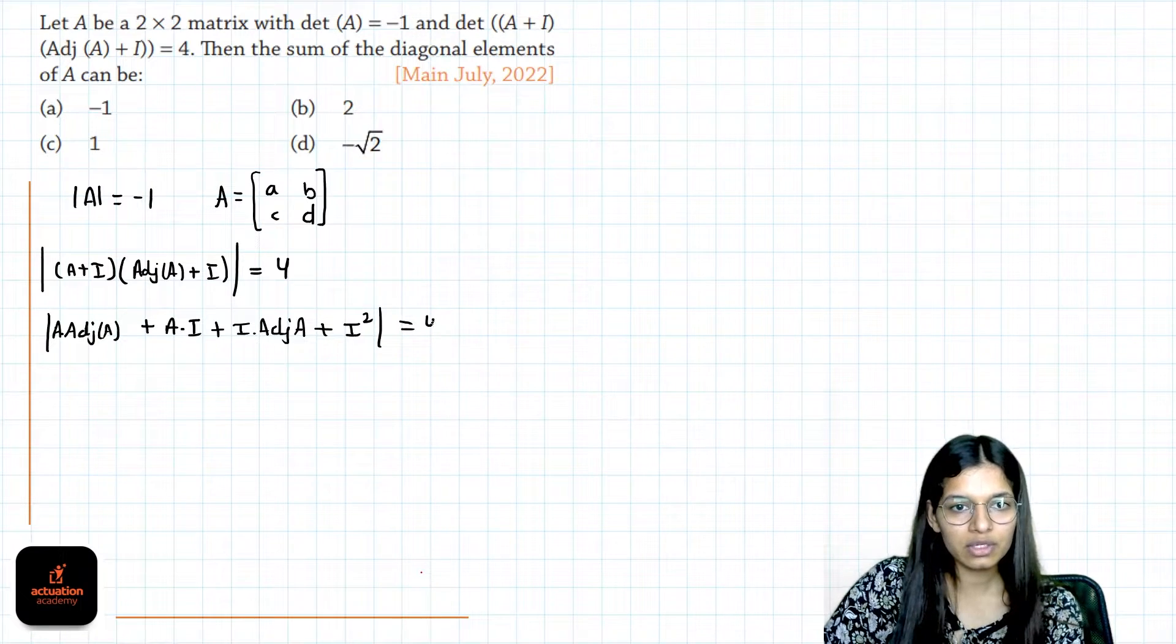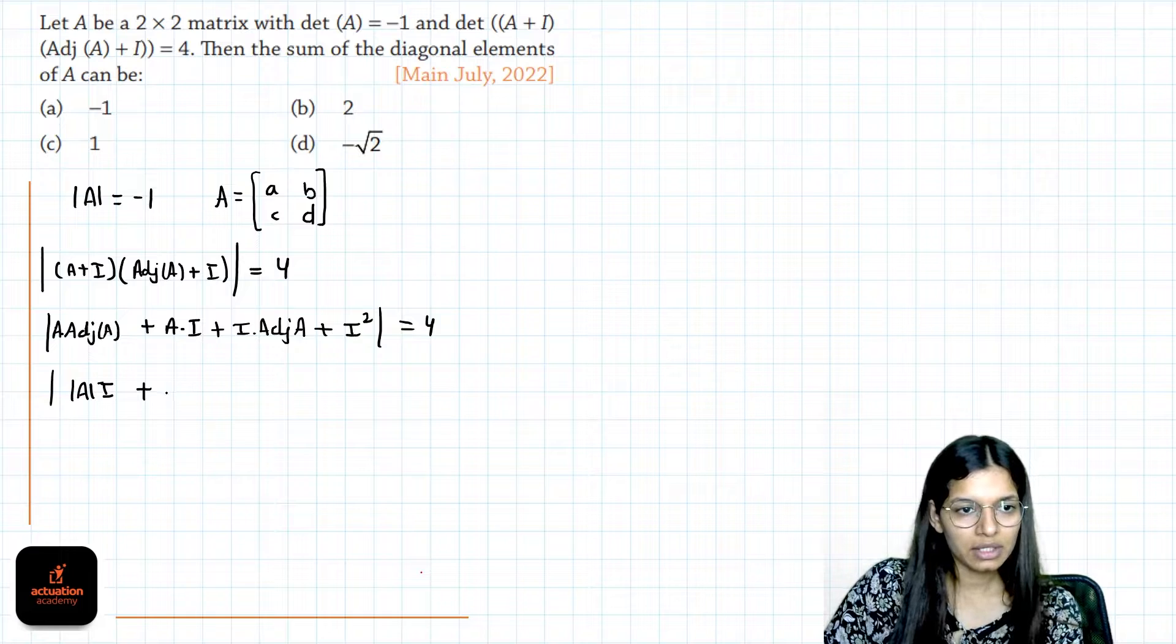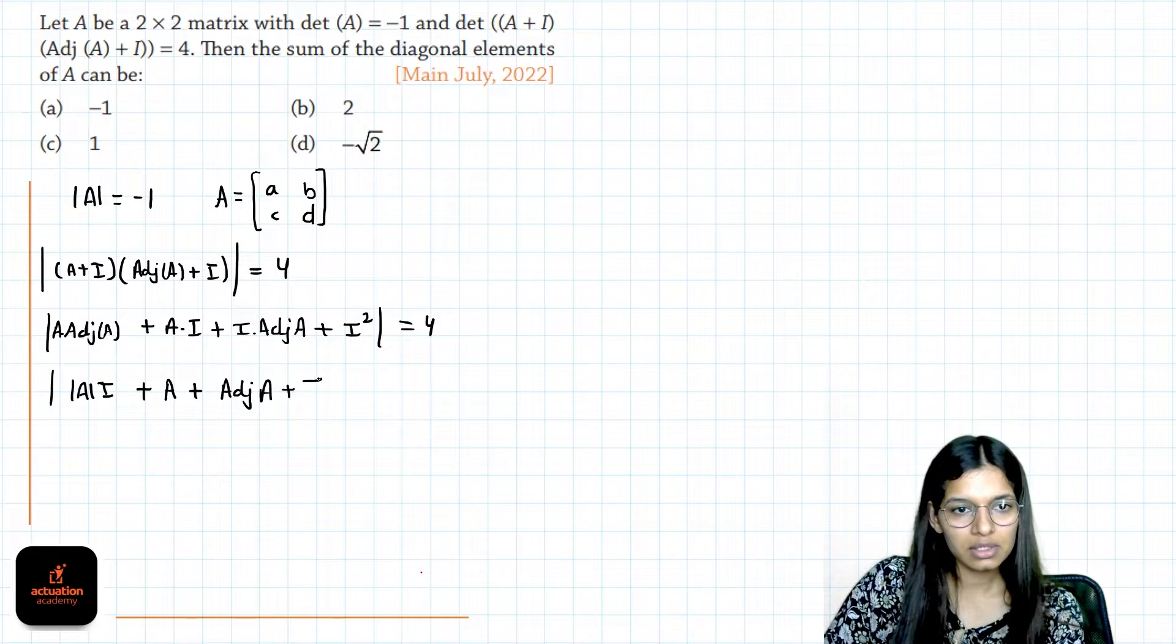This determinant is given as 4. A into adjoint of A, we know determinant of A into I, right? So we get plus matrix into identity is always matrix plus adjoint of A plus I.